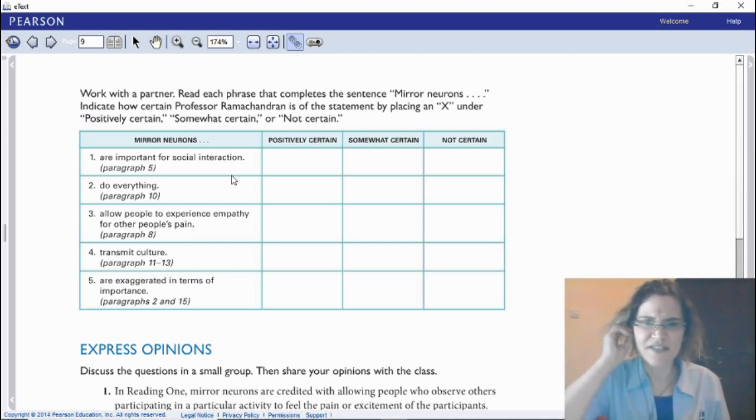Read each phrase that completes the sentence. The sentence starts with 'mirror neurons' and continues. Indicate how certain Professor Ramachandran is of the statements. Place an X under positively certain, somewhat certain, or not certain. We'll do number one together. 'Mirror neurons are important for social interaction.' Go back to the text to figure that one out. That's why it's important for you to annotate the keywords: mirror neurons, social interaction. Go over the text and see whether it is written as positively certain, somewhat certain, or not certain. And yes, of course, it's positively certain. Now you can pause the video to do numbers two, three, four, and five.